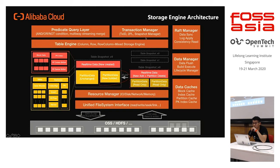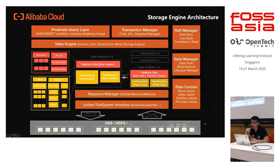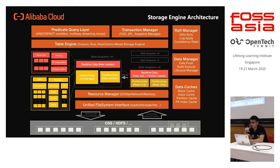The transaction manager has two-phase commit and MVCC for snapshot isolation. We have a consensus algorithm manager and graph manager that apply consistency across different nodes for distributed transactions. We cache blocks, indexes, partition, and primary key indexes. The storage portion is pluggable — the grey-coloured component means you can point it to object storage, HDFS, or whatever file system you like. They're all modular.